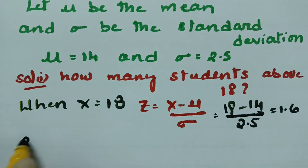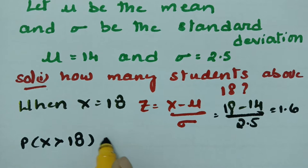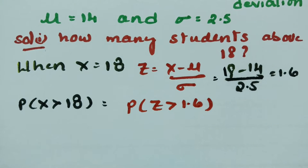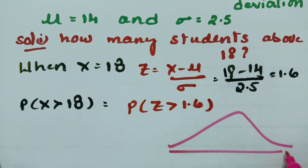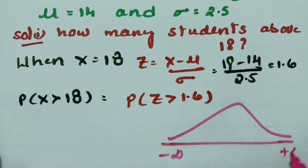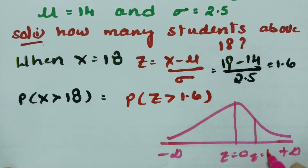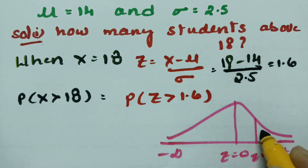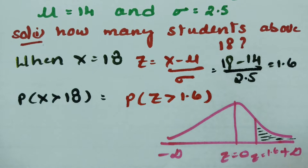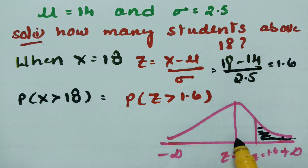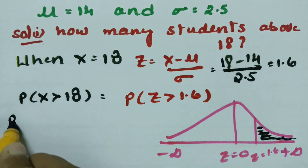The probability of x greater than 18 is equivalent to P(z > 1.6). Drawing the normal distribution from minus infinity to plus infinity with z = 0 at the center, z = 1.6 lies on the positive side. The required area is to the right of z = 1.6. Instead of integrating to plus infinity, we calculate 0.5 minus the area between z = 0 and z = 1.6.